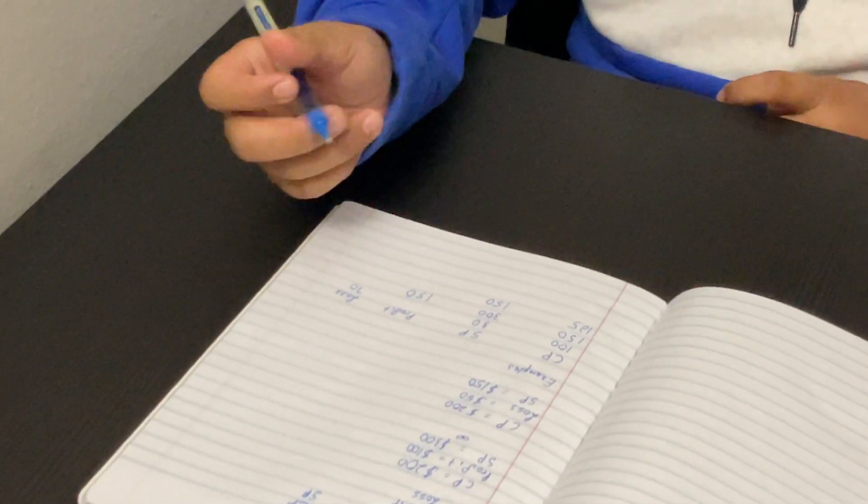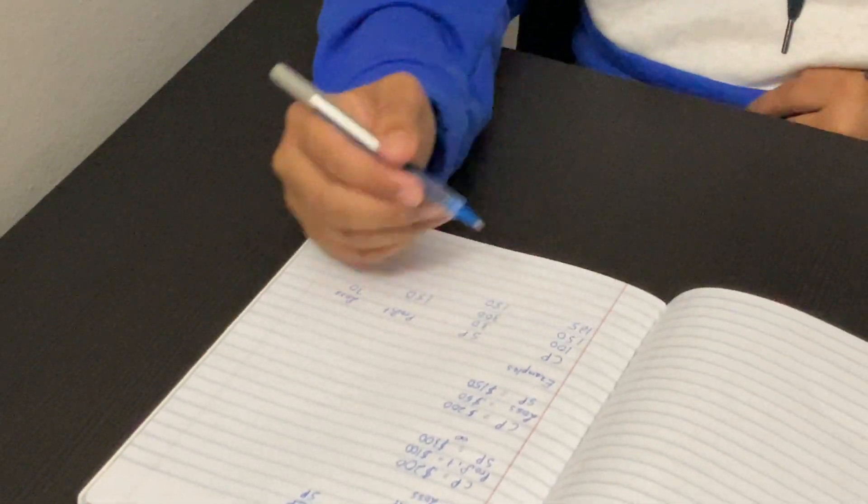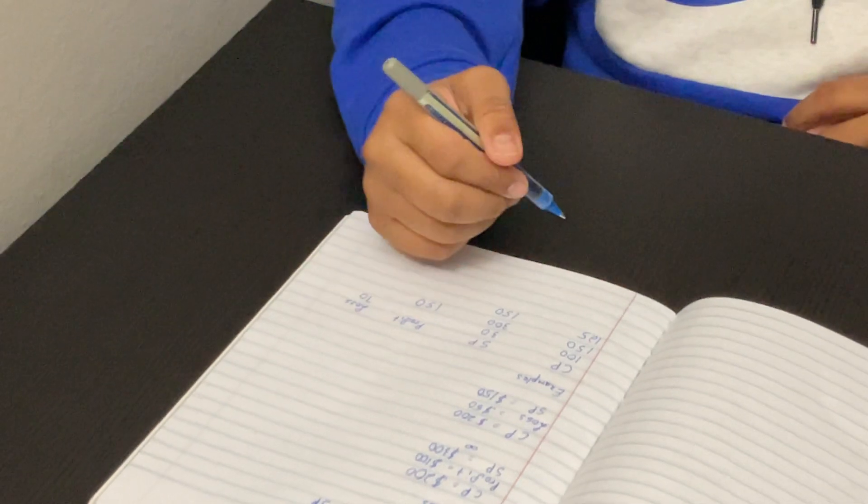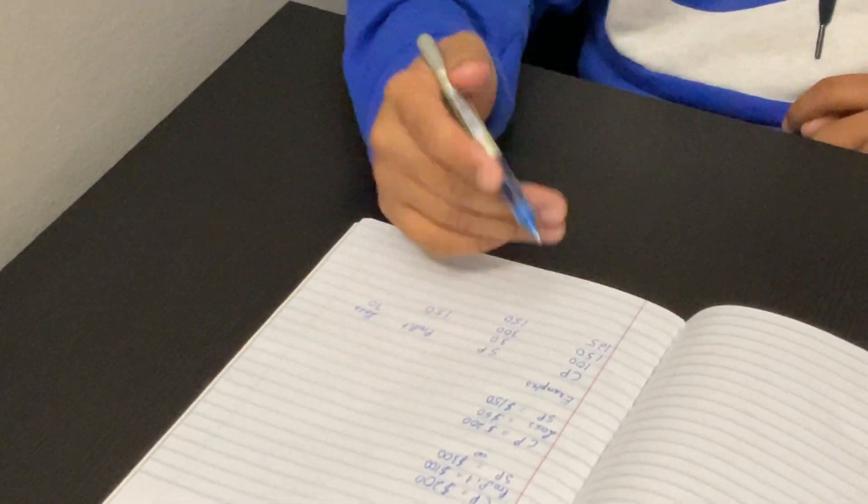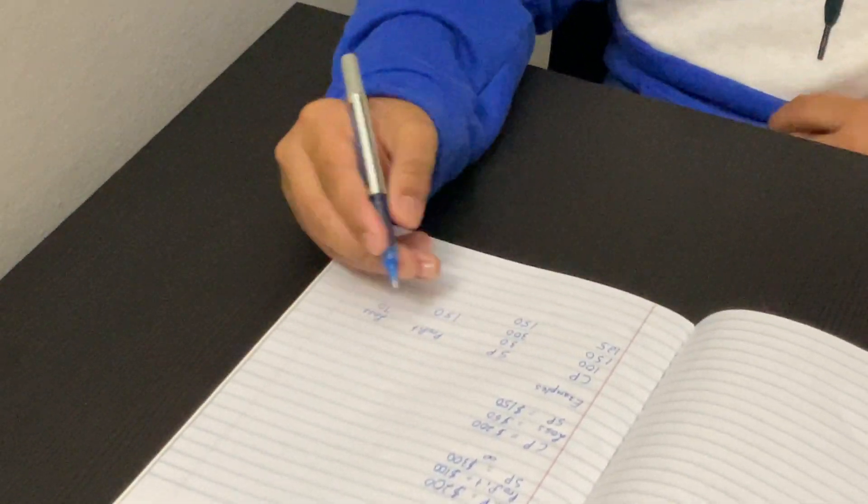Our last example is, the cost price is $125, and the selling price is $150. Since we know that SP is bigger, the profit would be $25.